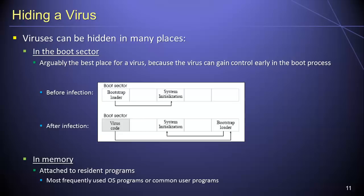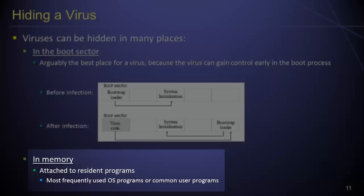Another common place for viruses to be hidden is in system memory. On modern computing devices, it is common for hundreds of programs to be executed upon system startup. If any of these programs is infected with a virus, the virus might propagate by attaching itself to other programs currently contained in the system's memory. In this way, even if the original host program is terminated, the virus will continue to be active. Operating system programs or common user programs are good targets since they are likely to be activated often.